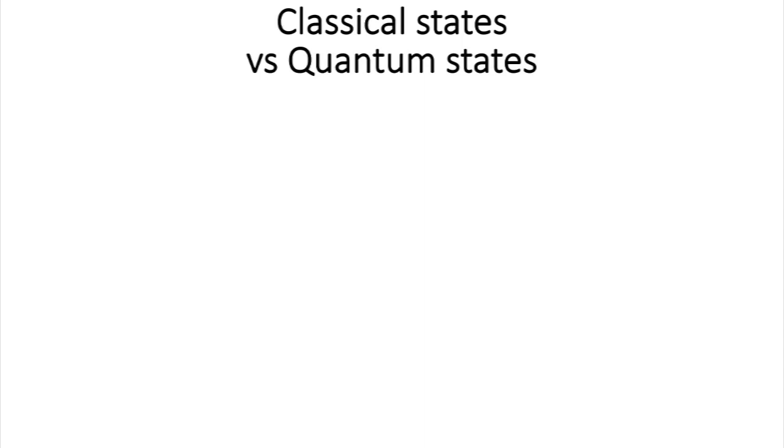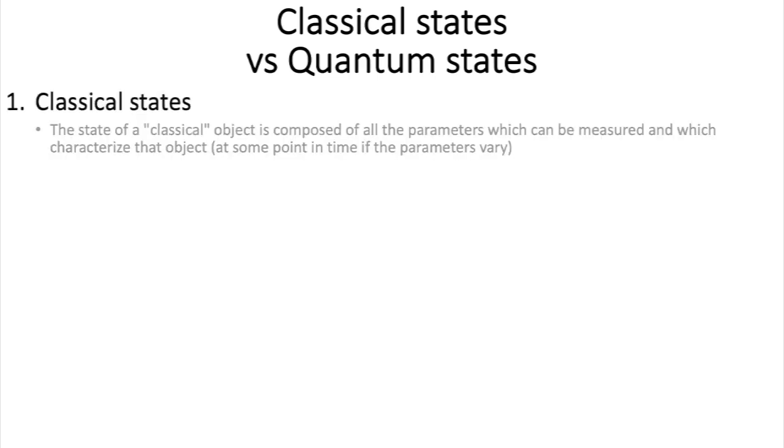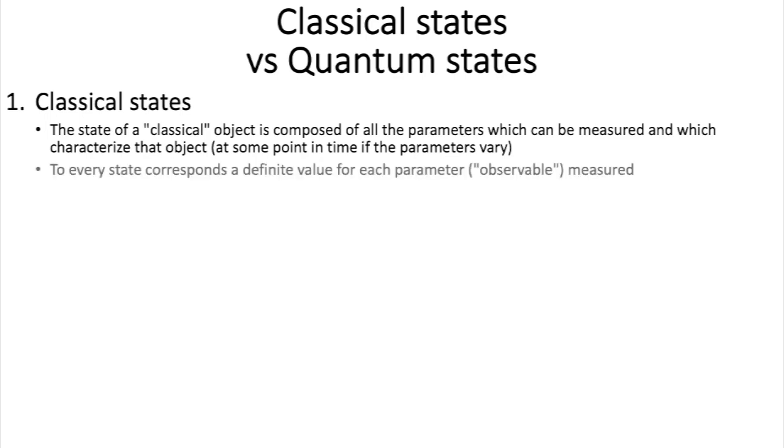I've said it in a previous video, but this is an important statement, so I'll say it again. What we call a state in quantum physics is different from a state in classical physics. In classical physics, the state of an object is just the list of the properties that you can measure at any time. Pretty simple. Now, in quantum physics, it's different.